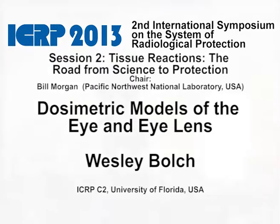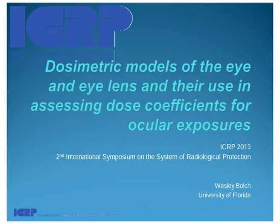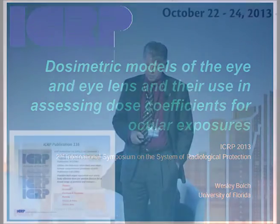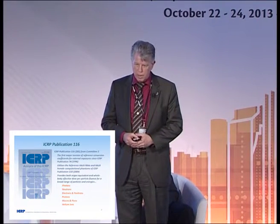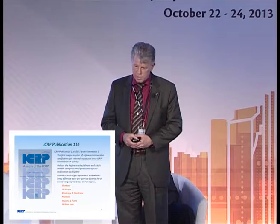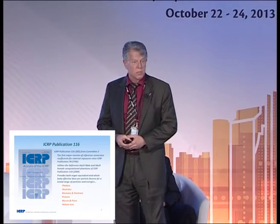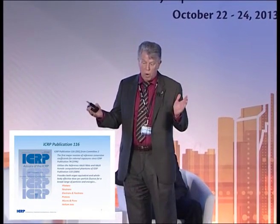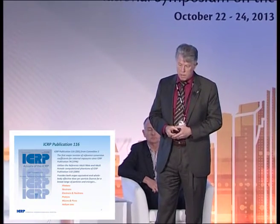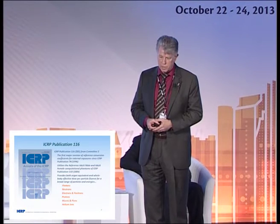I'm here representing Committee 2 to talk about the dosimetric models for assessment of eye exposures. A lot of this is involved in ICRP publication 116, which was generated by the DOCAL task group, task group 4, ably led by Nina Patussi from Helmholtz-München. This was the first major revision of dose coefficients for all external exposures, and made use of the reference male and reference female voxel phantoms produced in ICRP publication 110.